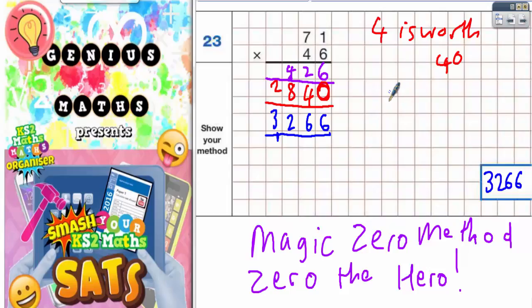Just a little note before we carry on to the next question. Some people, once they've got the 426, they forget to put the magic zero in first and they end up doing 4 ones, 4 sevens.